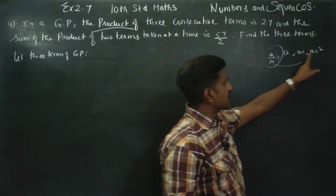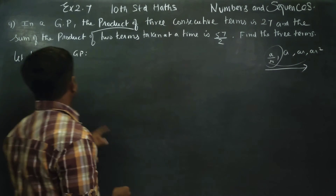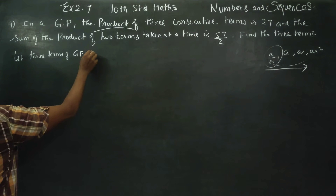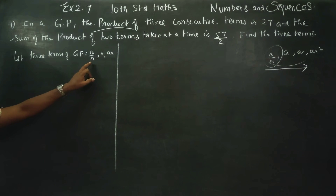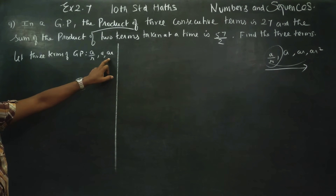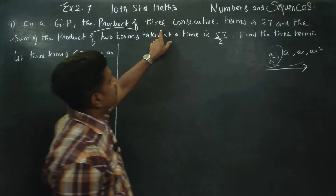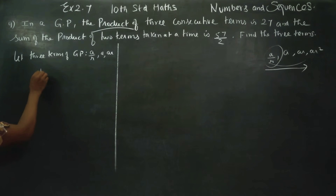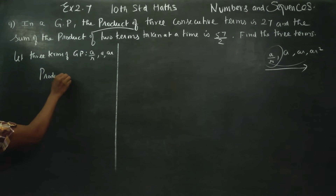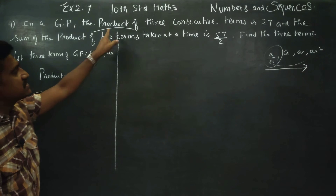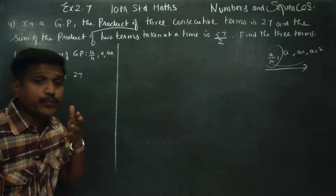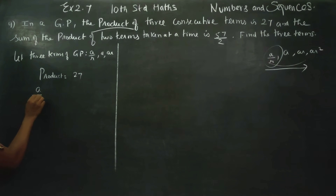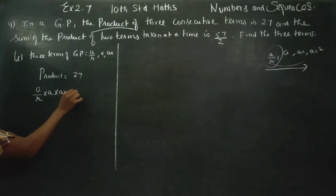Let the three terms be A by R, A, and AR. Product of three terms is equal to 27. You have to multiply the first term into the second term into the third term: A by R, into A, into AR is equal to 27.